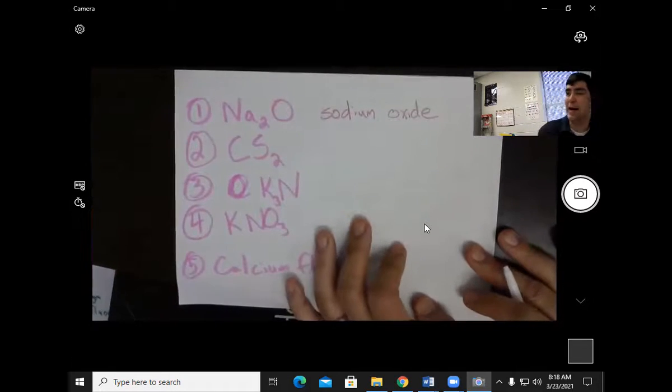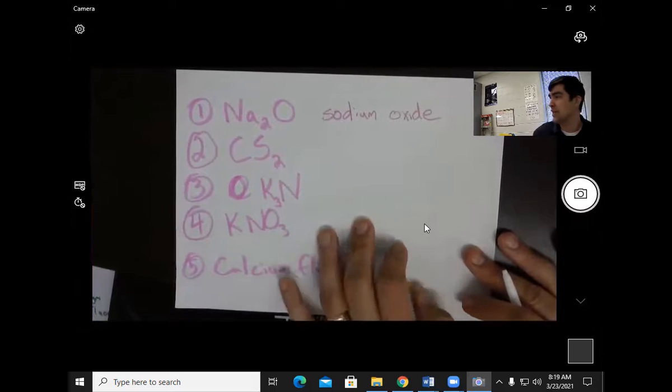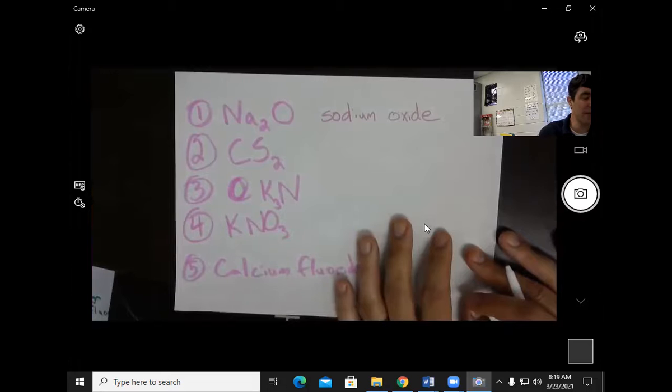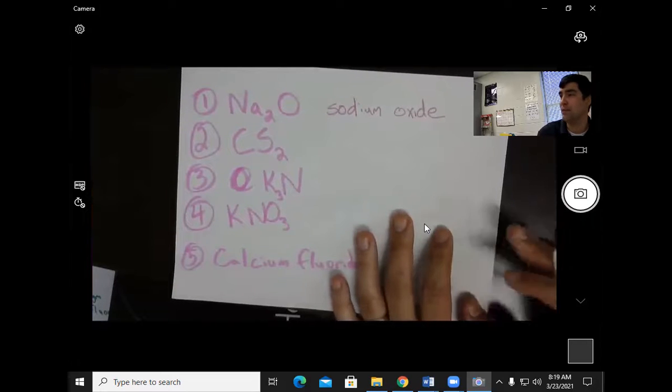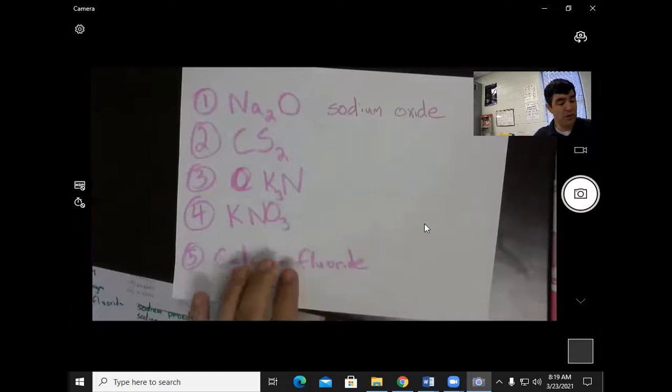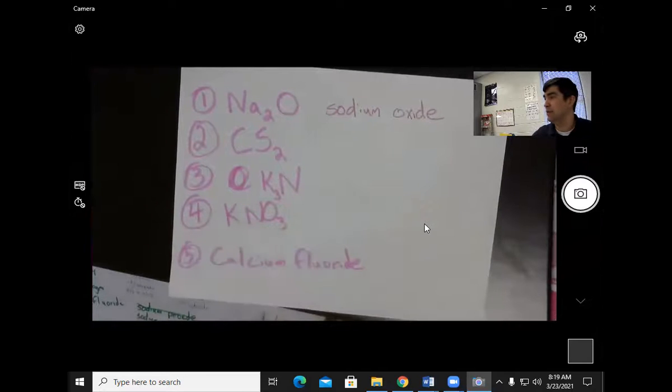That's what this is called. The first one is called sodium oxide. No prefixes. I take off the ending and add -ide. I don't use prefixes because that is only with covalent compounds. -ide is on the end of every compound, except for ones that are polyatomic ions.